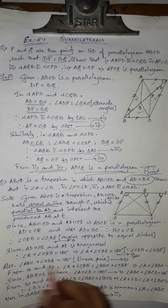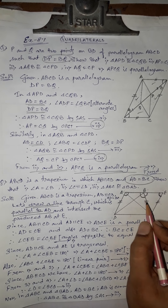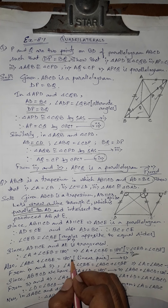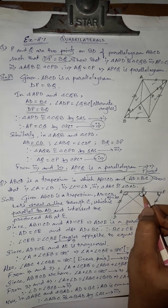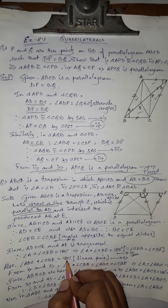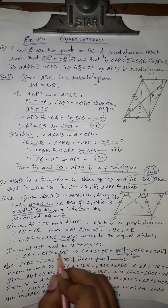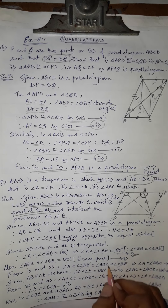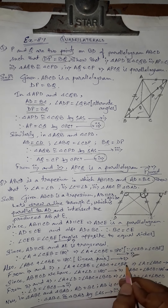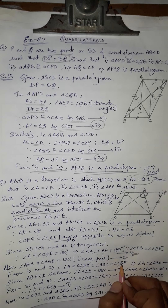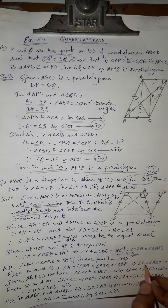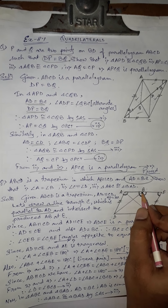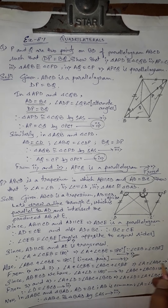Also, angles ABC and CBE form a linear pair, so angle ABC plus angle CBE equals 180 degrees — this is number two. Since both number one and number two equal 180 degrees, we equate them: angle A plus angle CBE equals angle ABC plus angle CBE. Cancelling angle CBE from both sides, angle A equals angle ABC — that is, angle A equals angle B. This is the first proof.